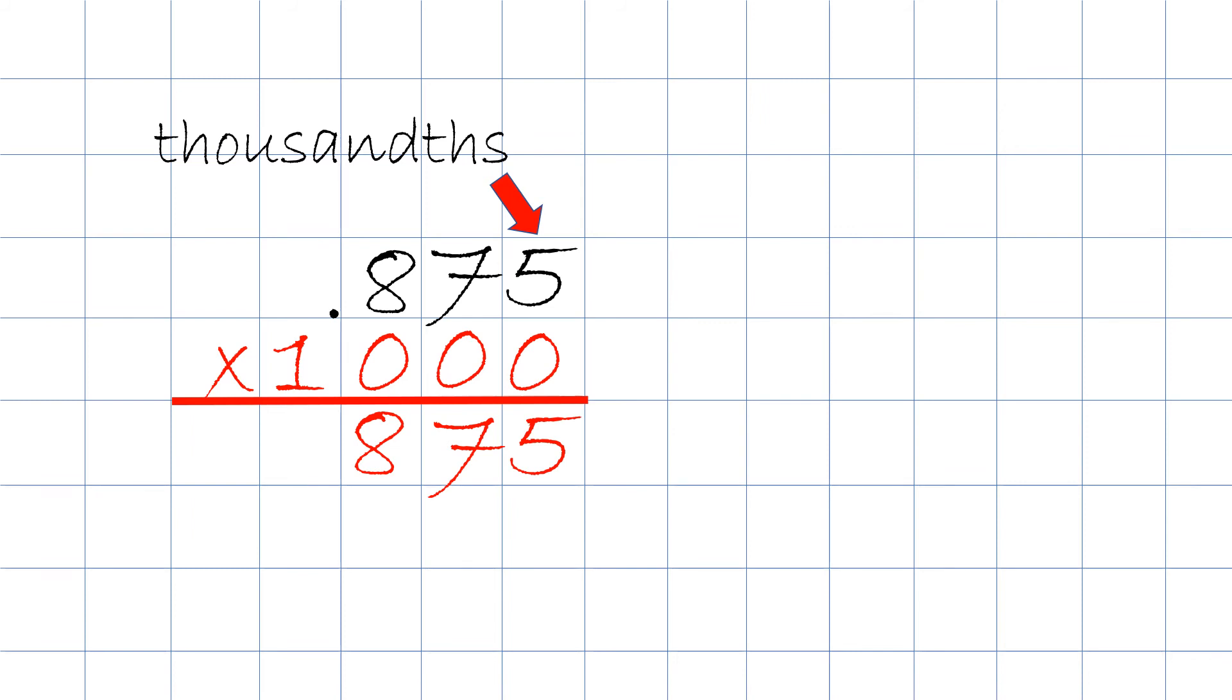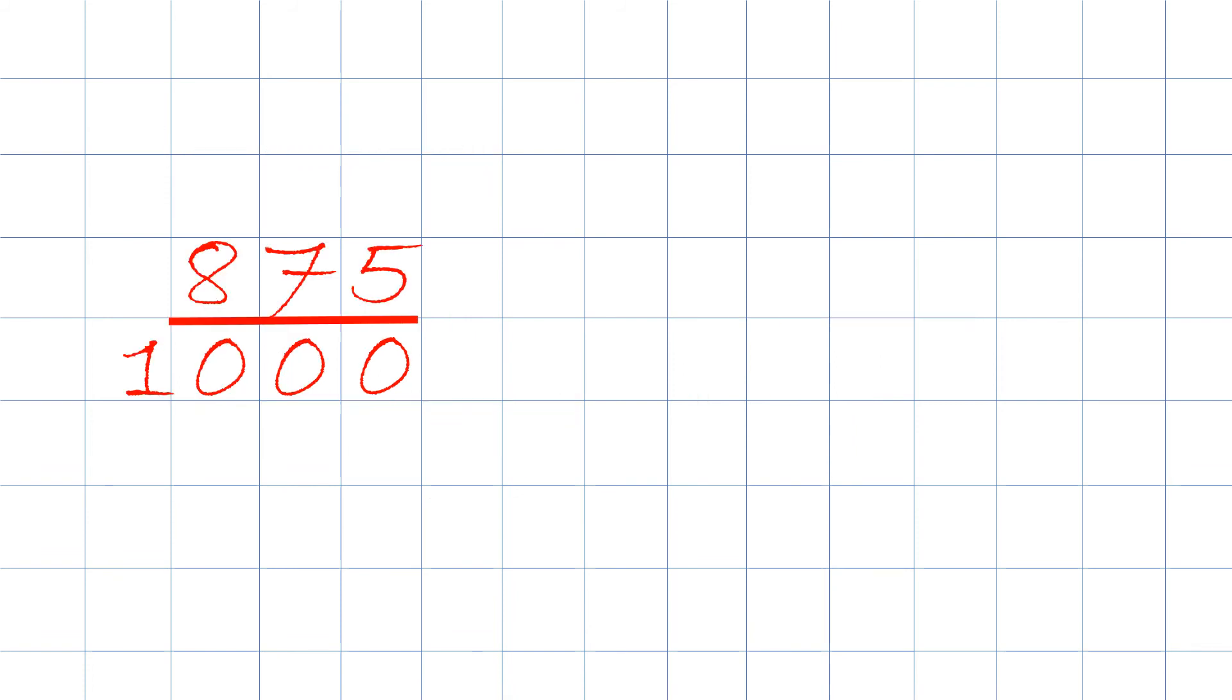We now make it into a fraction. We put 875 on top, that's the numerator, over the denominator which will be 1000. Now, we have a big fraction, 875 over 1000, and we have to reduce it.